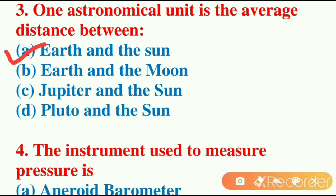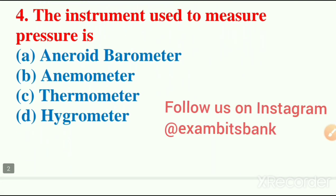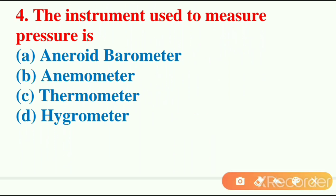One astronomical unit is approximately equal to 150 million kilometers. So this is one of the most important questions. Fourth question: the instrument used to measure pressure is? Aneroid barometer, anemometer, thermometer, hygrometer. The correct answer is aneroid barometer.